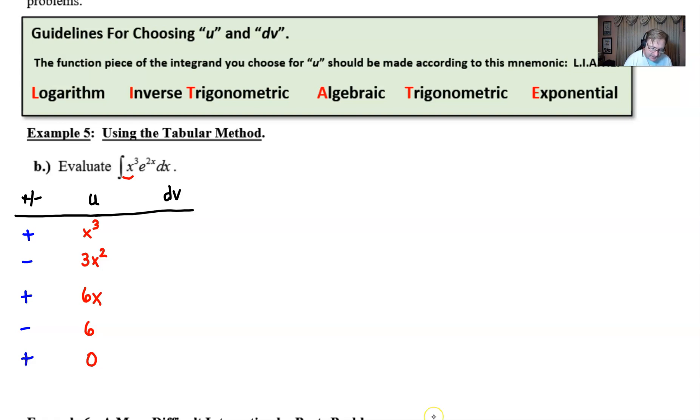Now the thing I really wanted to talk about is we have to be very careful with the selection of dv as e to the 2x. This must be handled very carefully because I see kids have trouble with this all the time. Remember that we're integrating e to the 2x, we're not differentiating. The derivative of e to the 2x is 2 e to the 2x but the anti-derivative is one half e to the 2x.